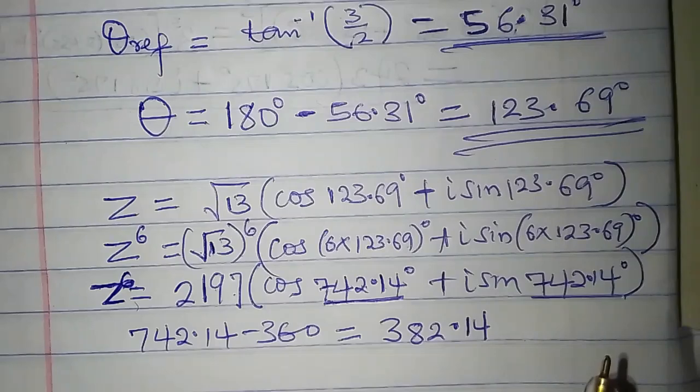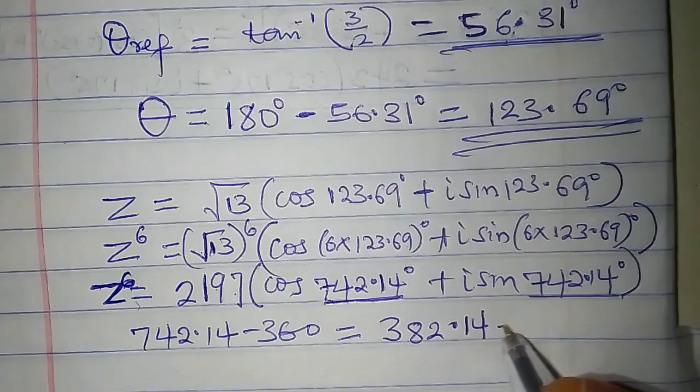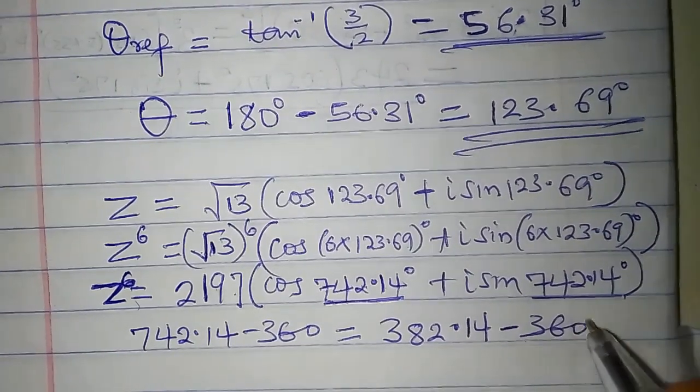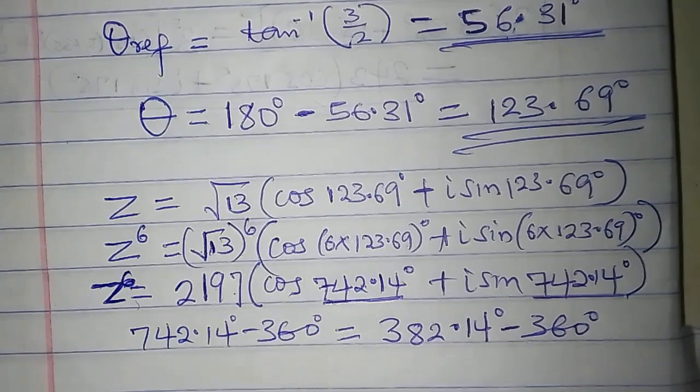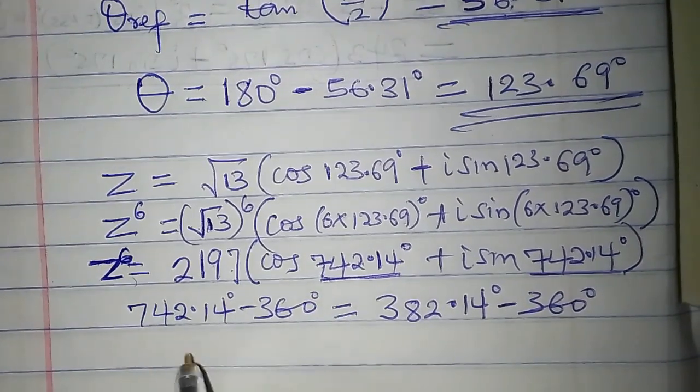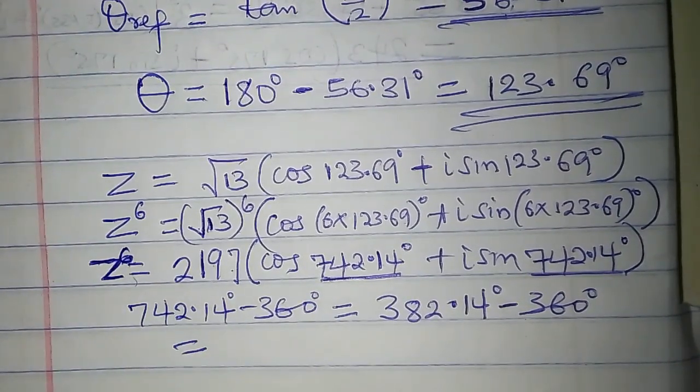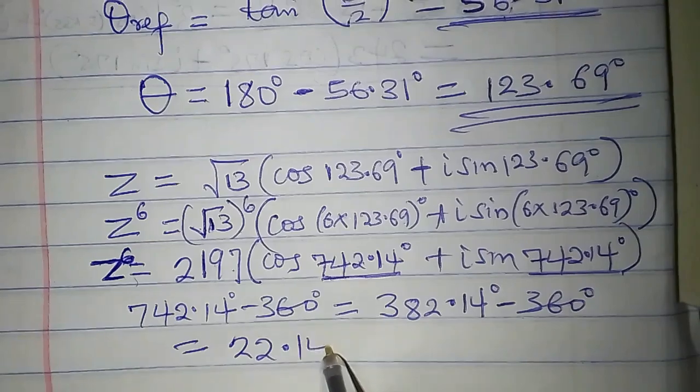If it is still greater than 360, we subtract 360 again from it. 382.14 minus 360 is equal to 22.14.